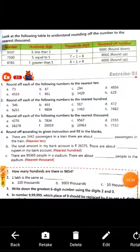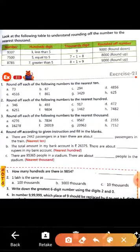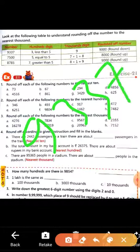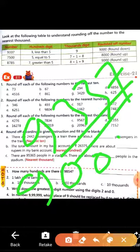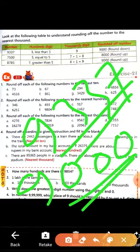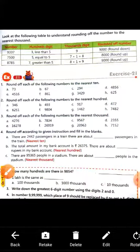We can see the nearest thousand digit. See, the nearest thousand digit, 9337, where is the nearest thousand digit? That will be 9000. Students, this exercise is very simple. If you have any query and any problem, then contact me.